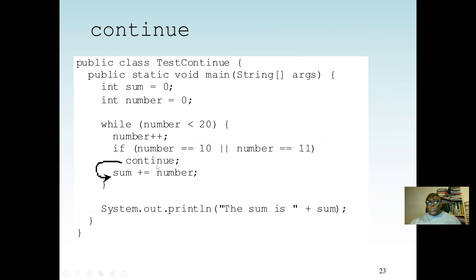For the continue example: if number equals 10 or 11, we don't add it to the sum — we skip. We move to 12, 13, all the way to 19. Continue doesn't stop the loop; if the condition is true, it skips execution of the addition statement. So the result will be the sum from 0 to 19, excluding 10 and 11. Then we print the sum.